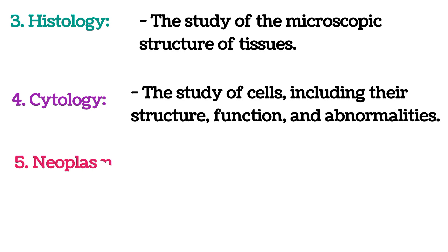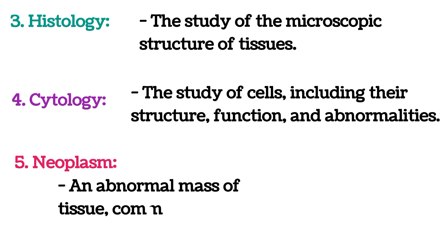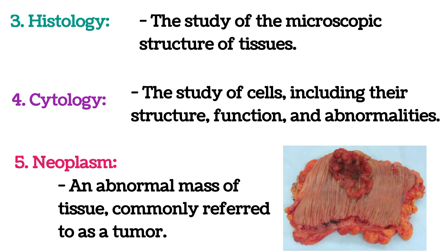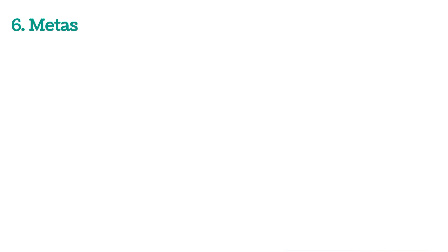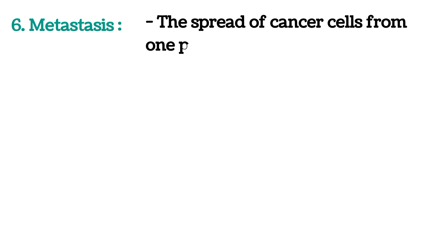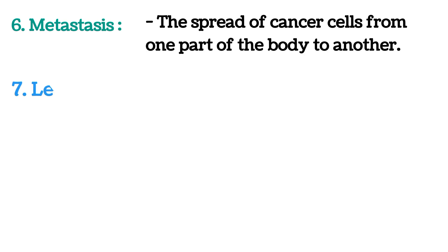5. Neoplasm: An abnormal mass of tissue, commonly referred to as a tumor. 6. Metastasis: The spread of cancer cells from one part of the body to another.